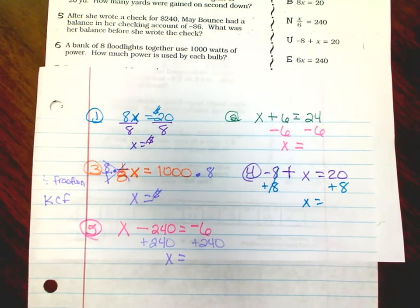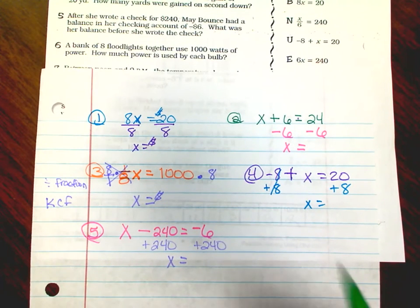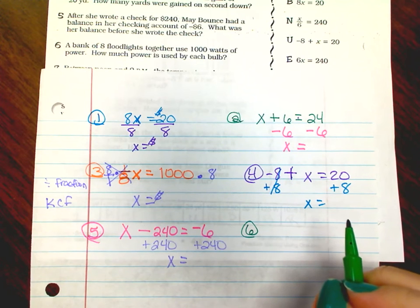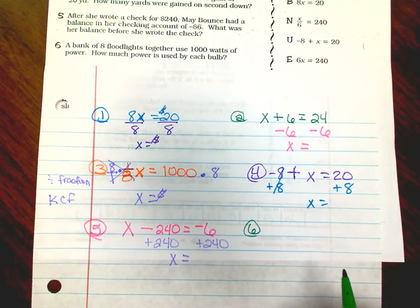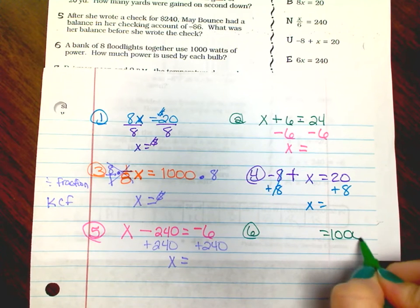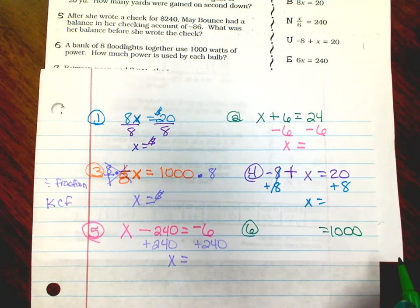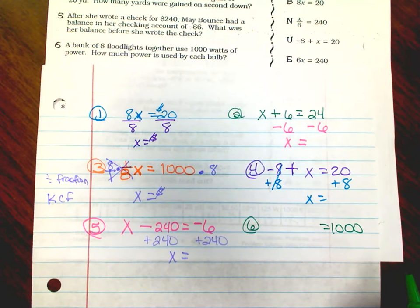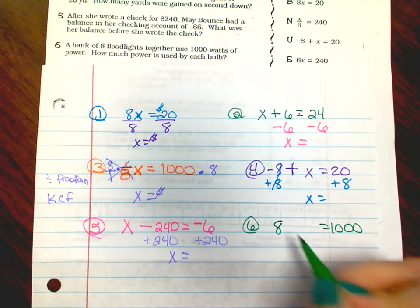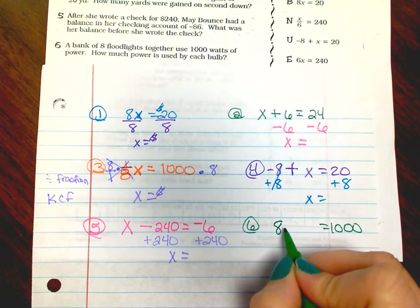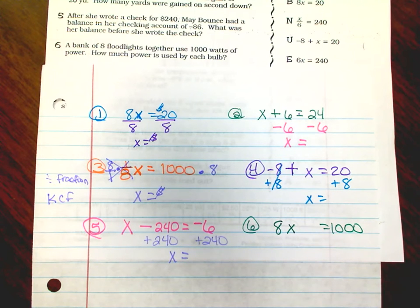Okay, number six: a bank of eight floodlights together use one thousand watts of power. How much power is used by each bulb? So I know it's gonna equal one thousand, so now we need to decide what we need to do with the other information. We have the eight bank of, eight floodlights, so eight times what equals a thousand?